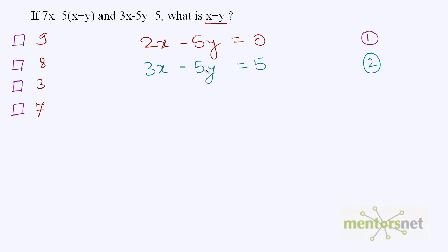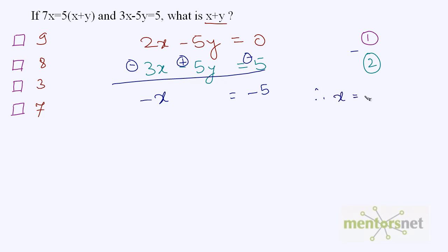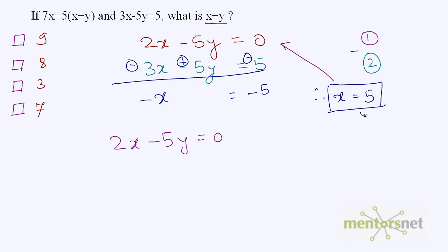Now you can remove 5y from both equations by subtracting equation 2 from equation 1. Subtracting: 2x minus 3x gives minus x, minus 5y plus 5y gives 0, and 0 minus 5 gives minus 5. Therefore, x is equal to 5. Now find the value of y by substituting x into equation 1, which is 2x minus 5y is equal to 0. So 2 times 5 is 10 minus 5y is equal to 0. Therefore 5y is equal to 10, so y is equal to 2.